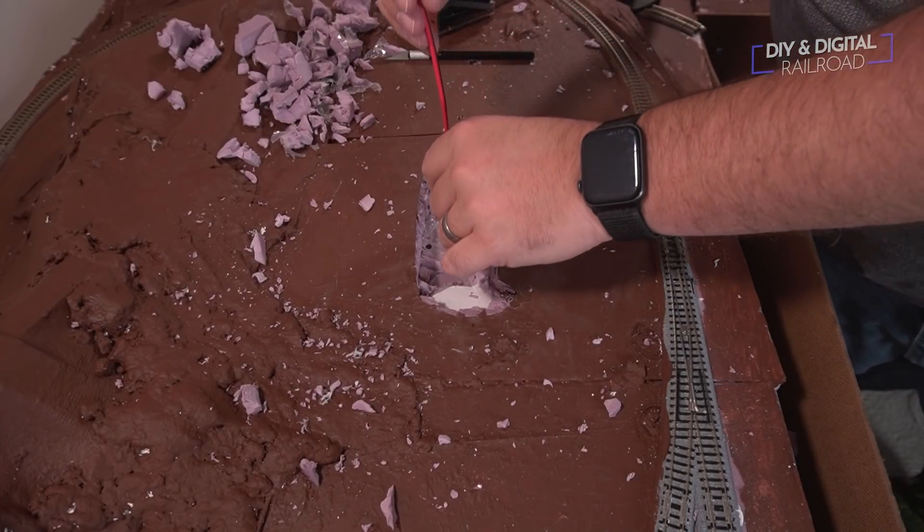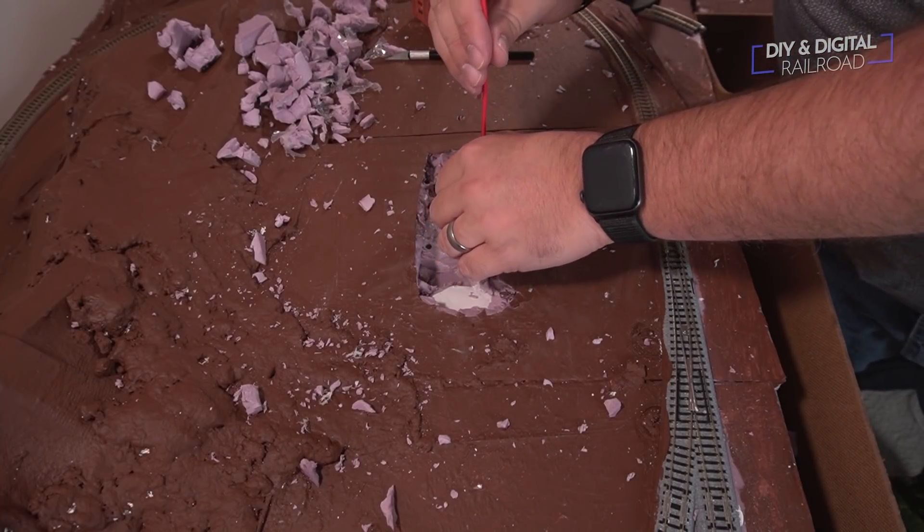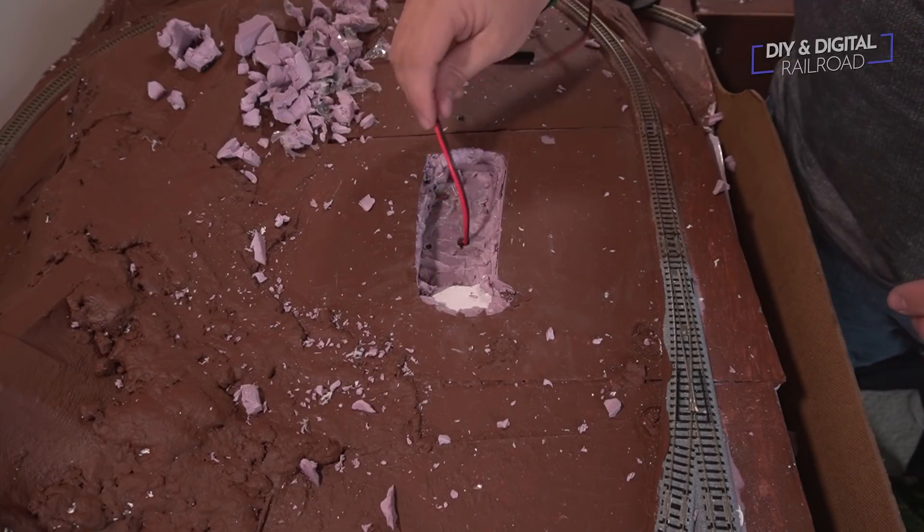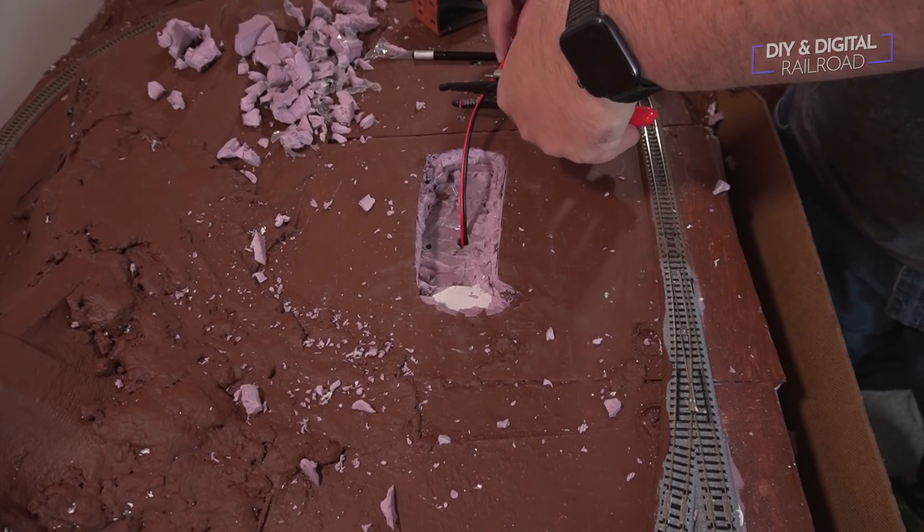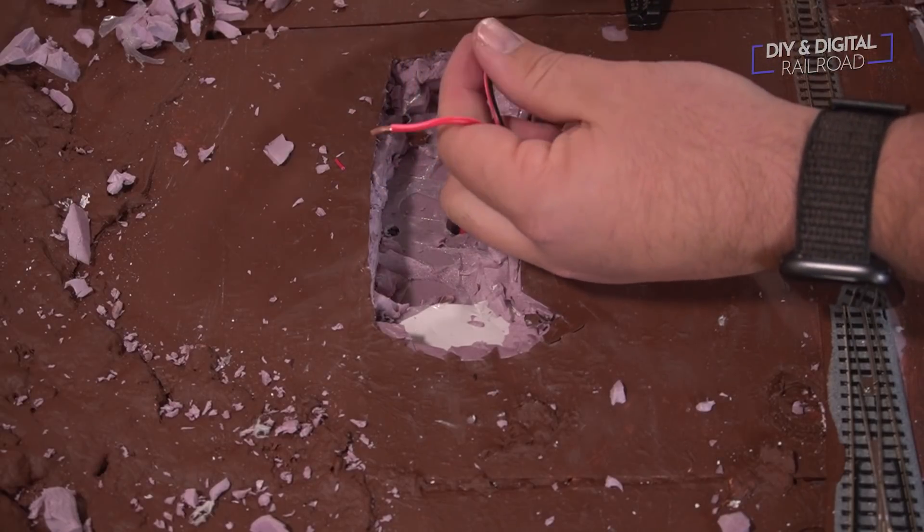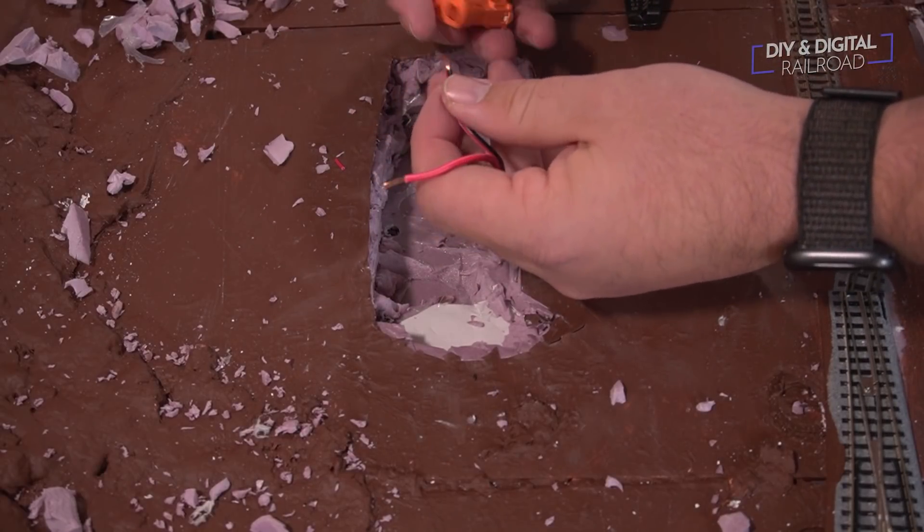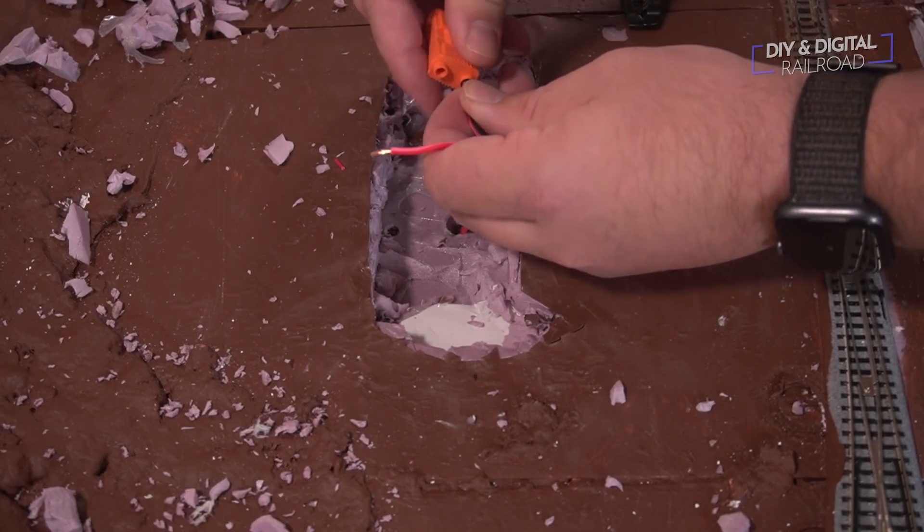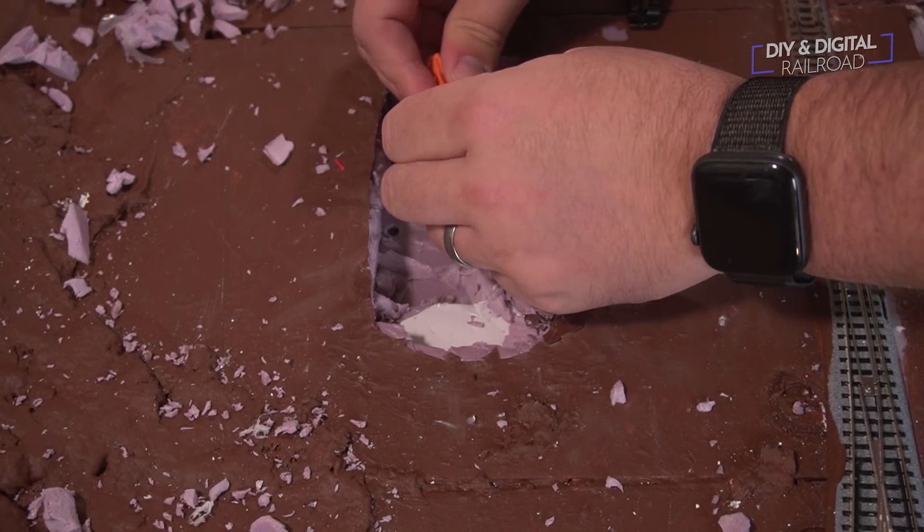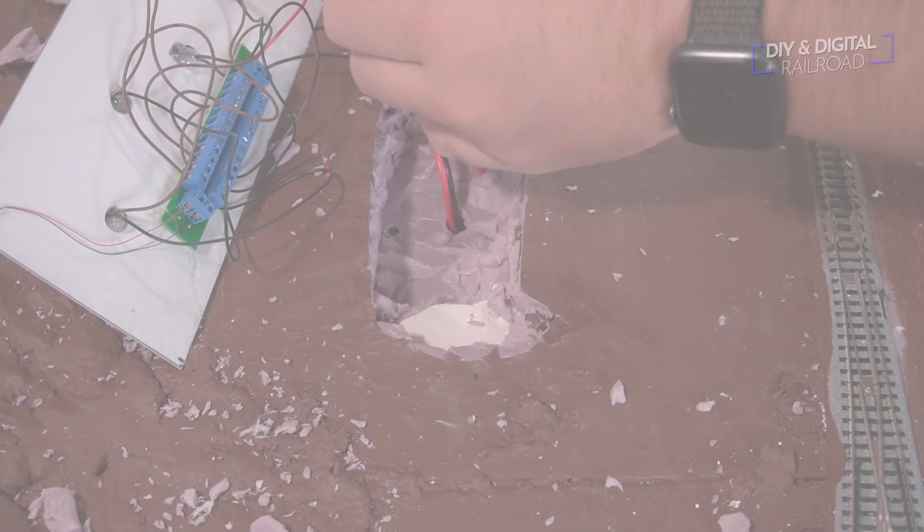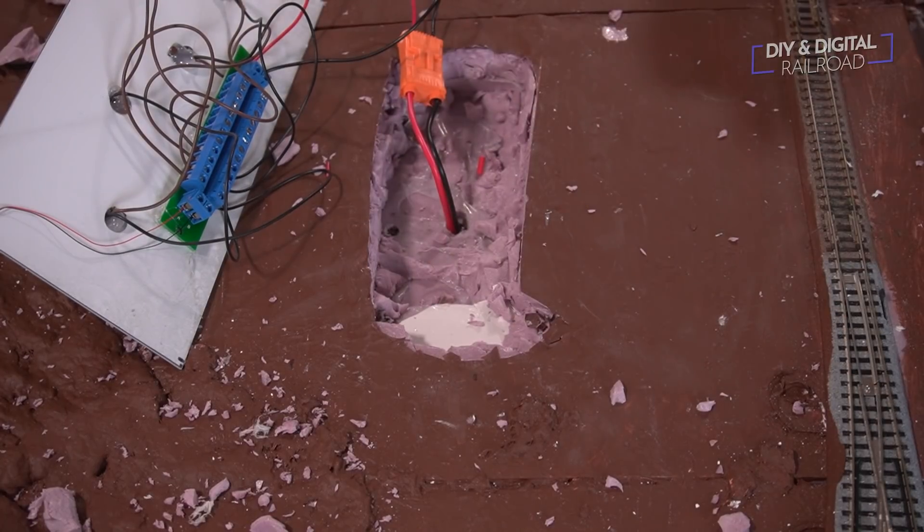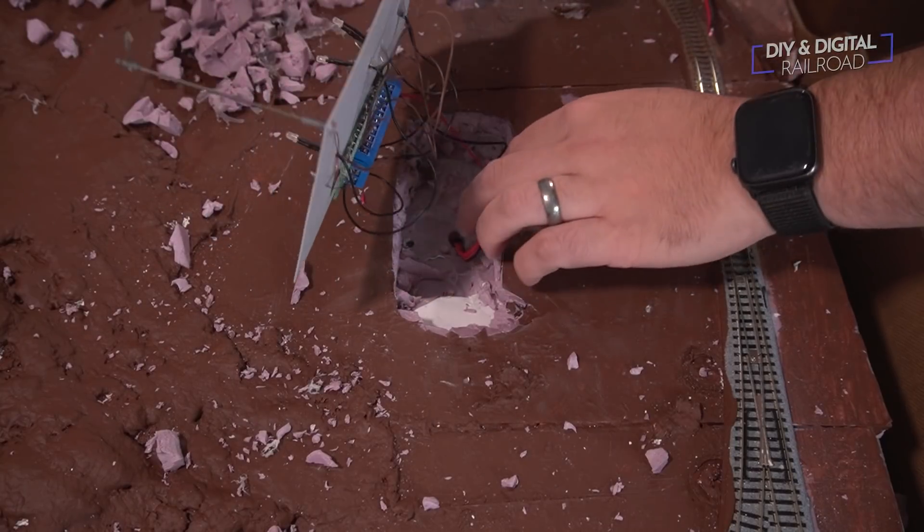Now I can feed the main power wire for this particular section through. I'm using 18 gauge wire that is stranded for this. And once I get it down and in place and through, I go ahead and cut it to length. And then after that, I can go ahead and strip the ends of the wire and then I can put the quick connector on it. And I absolutely love these quick connectors. You've seen me use them plenty of times. They make things a lot easier on the model railroad.